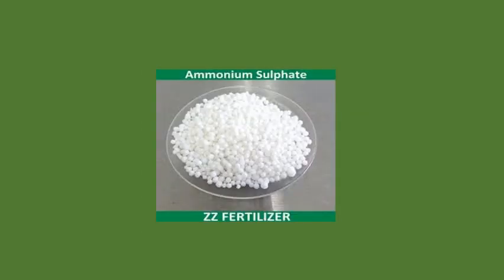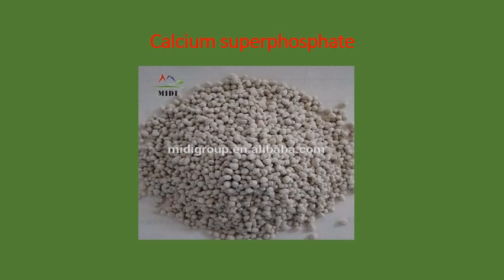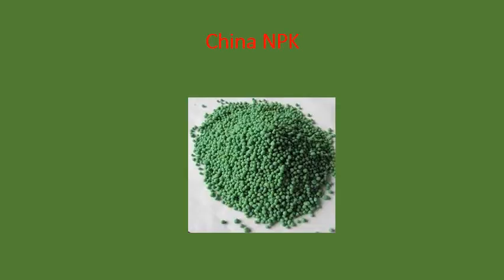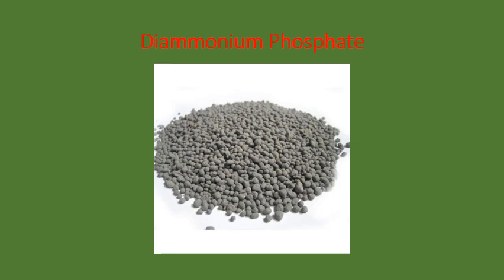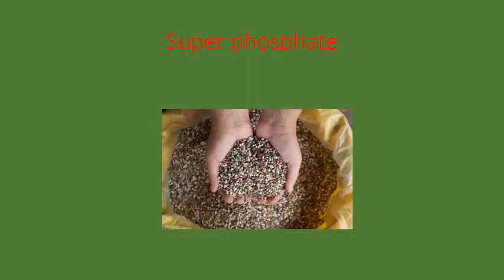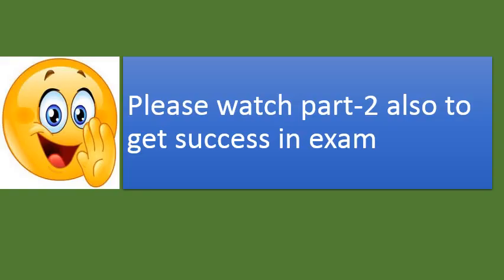Remember ammonium sulfate, calcium superphosphate, and NPK — that is nitrogen, phosphorus, and potassium. These are important fertilizer compounds you need to identify.